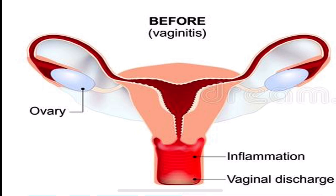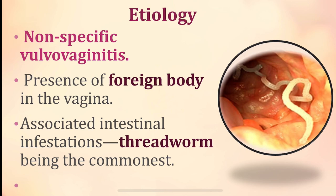The cause for non-specific vulvovaginitis is a foreign body in the vagina, or it could be associated intestinal infestations — people suffering with threadworm infestations or problems can also suffer with vulvovaginitis in childhood.